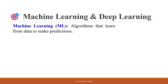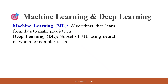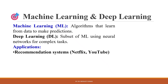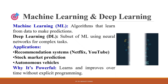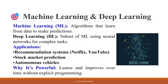Machine Learning and Deep Learning are the engines behind smart AI systems. Machine Learning involves algorithms that learn from data to make predictions. Deep Learning is a subset of machine learning using neural networks for complex tasks. Applications include recommendation systems like Netflix and YouTube, stock market prediction, and autonomous vehicles. What makes it powerful is that it learns and improves over time without explicit programming.